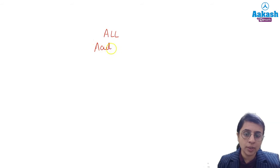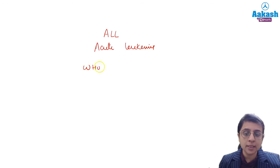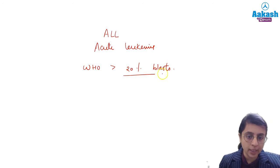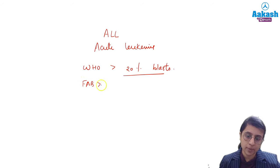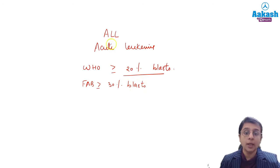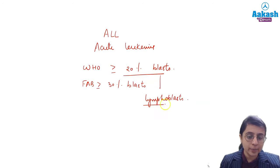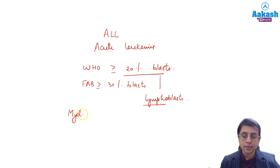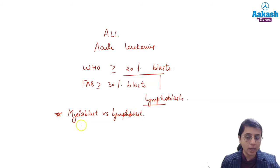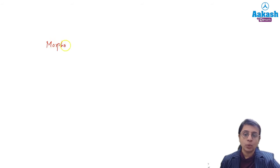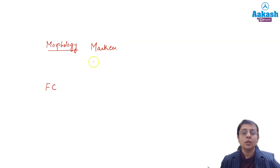Let's have a look at ALL now. Because it is acute leukemia, according to WHO the criteria is at least more than 20% blasts in bone marrow or peripheral blood, and more than 30% according to FAB. Definitely here the blasts are going to be lymphoblasts. You should be able to differentiate myeloblasts versus lymphoblasts on morphology and know the markers, as well as what you will see on flow cytometry.